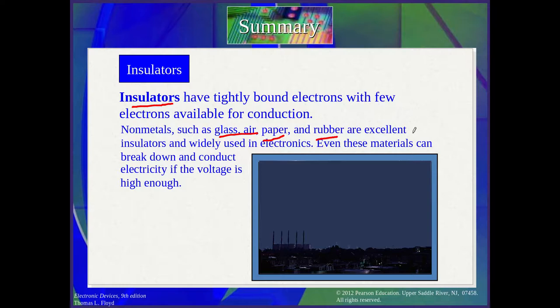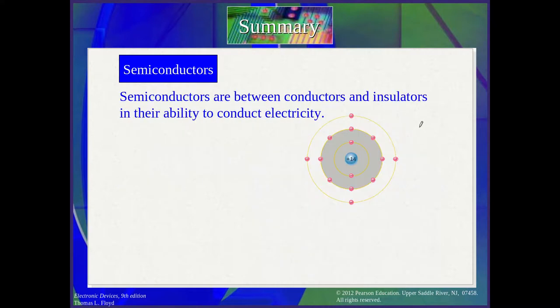Now there is a third type of material: semiconductors. We have conductors, insulators, and semiconductors. Semiconductors, from the name, are conductors but require certain conditions or something to happen for them to conduct electricity.